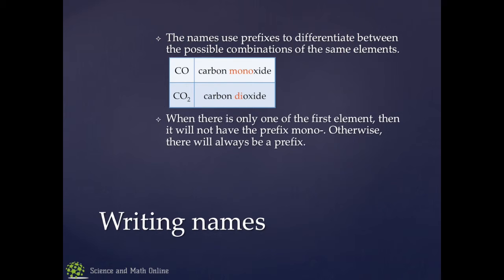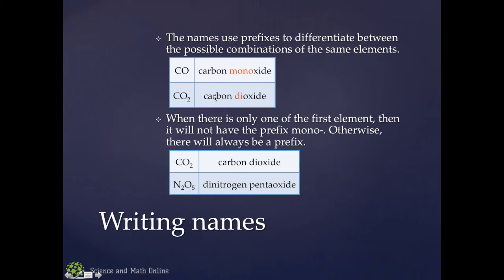When there's only one of the first element, it doesn't have a prefix. Notice I don't have monocarbon monoxide, monocarbon dioxide. If there's just one of the first element, we just drop it. Otherwise, there will always be a prefix. So when I have two nitrogens here in the bottom, that's dinitrogen pentoxide.